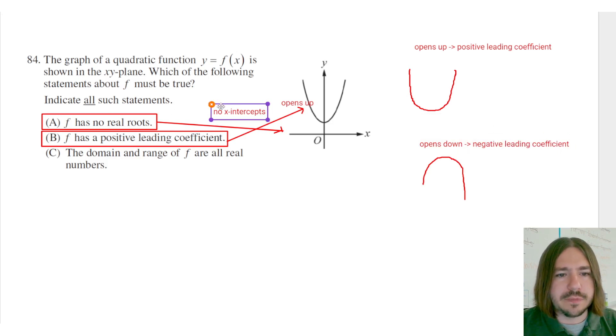So the last one says the domain and range of F are all real numbers. That's going to be false. Now the domain consists of all the possible X values, and there's no limitation on a quadratic function like this that indicates there is going to be a hole or an asymptote or anything that's undefined. We don't have anything like that.